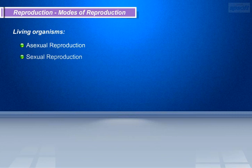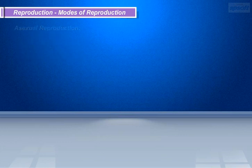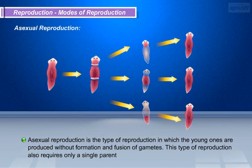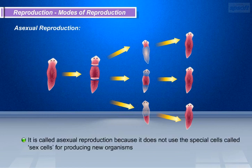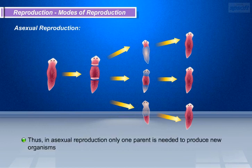Let us now discuss asexual and sexual reproduction in brief. Asexual reproduction is the type of reproduction in which the young ones are produced without the formation and fusion of gametes. This type of reproduction requires only a single parent. It is called asexual reproduction because it does not use the special cells called sex cells for producing new organisms. Thus, in asexual reproduction, only one parent is needed to produce new organisms.